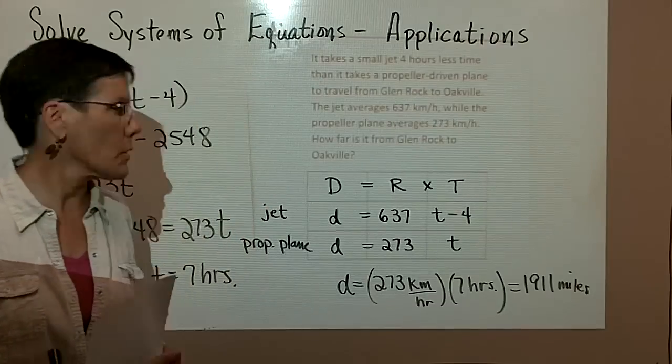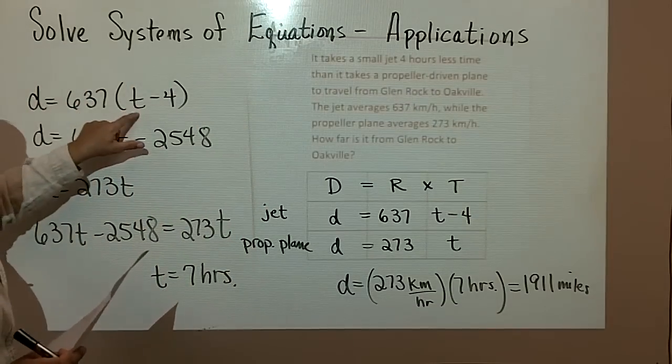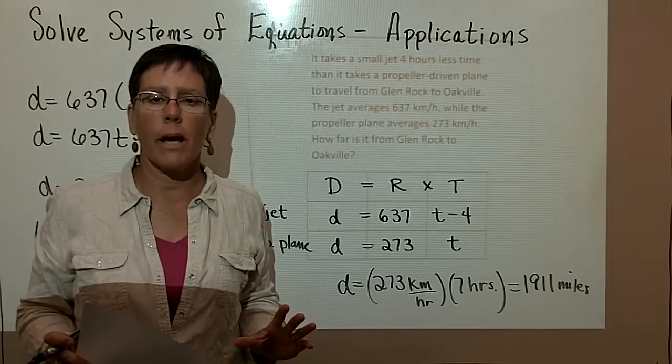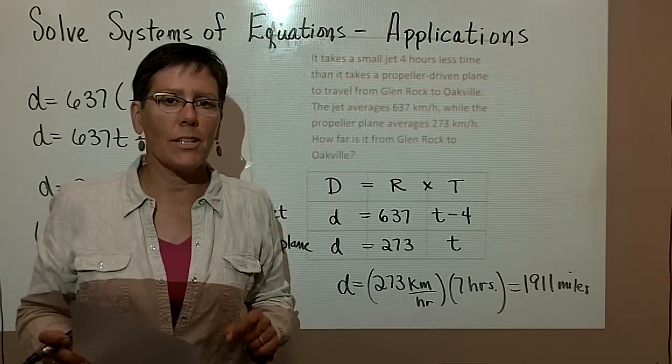Again, you should check it in the other equation. You should check it up here with T being seven and see if you get 1,911 miles as well. Then you can be guaranteed that you've done well.